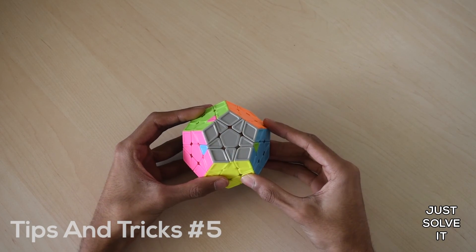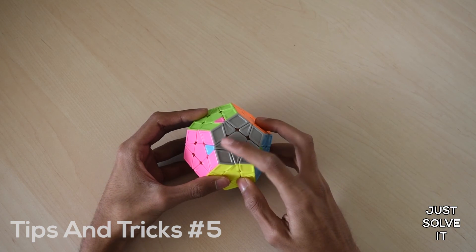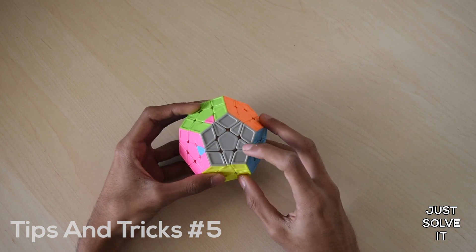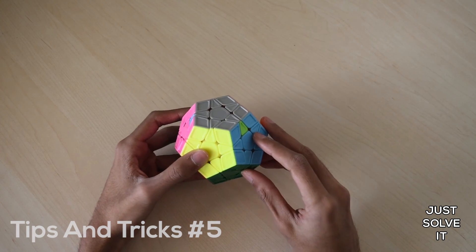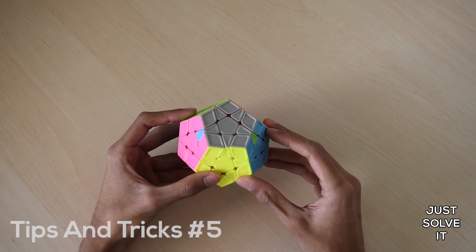This is the third case. It's where the U-perm is not on three adjacent faces. In this case, these three edges need to cycle counterclockwise. To solve this case, hold it like this and do this algorithm.